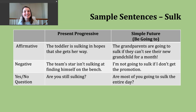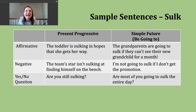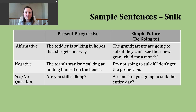So in the present progressive, I'm going to use a present form of be. If my subject is I, I use am. If my subject is you, we, or they, I use are. And if my subject is he, she, or it, I use is. So we're going to have subject, a form of be, and then the -ing form of the verb. Here's an example sentence: The toddler is sulking in hopes that she gets her way.